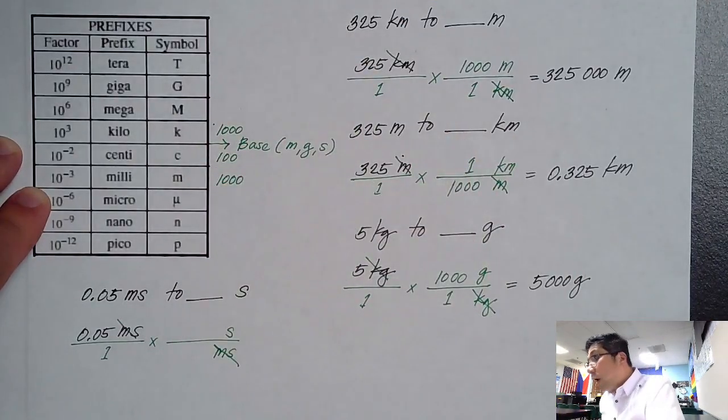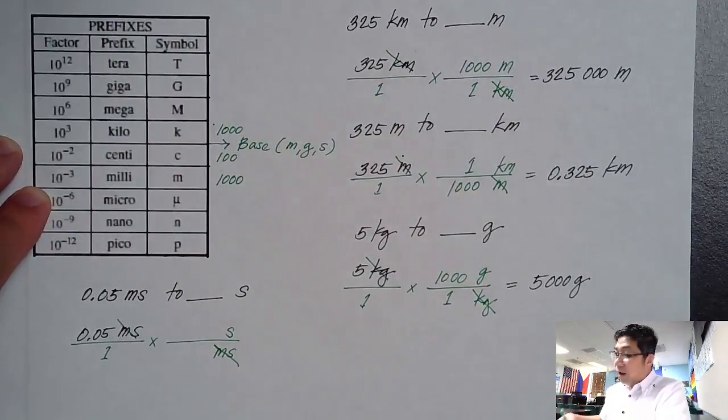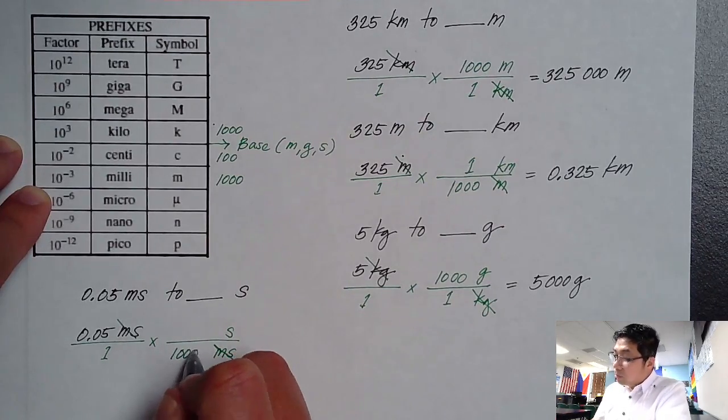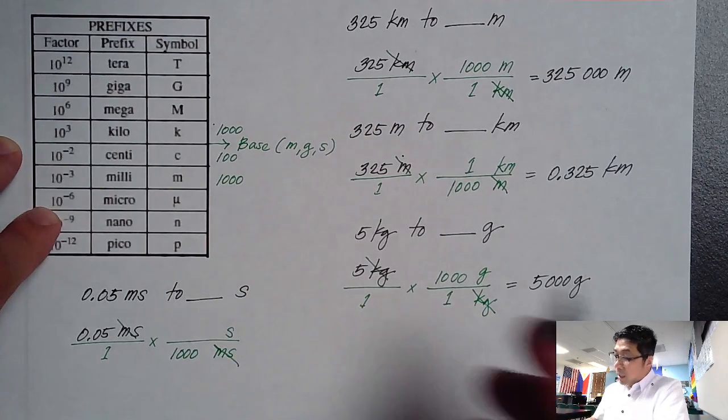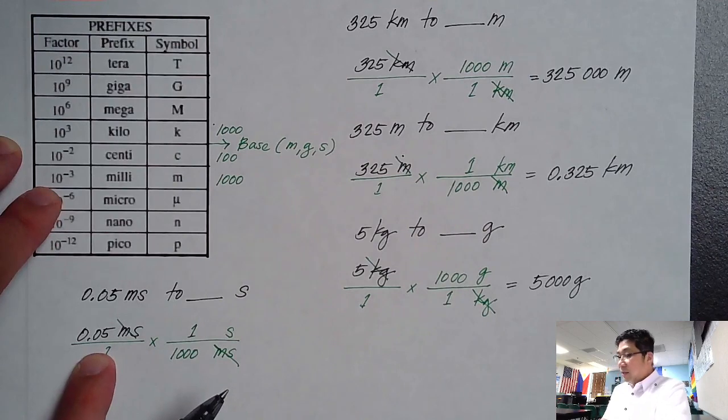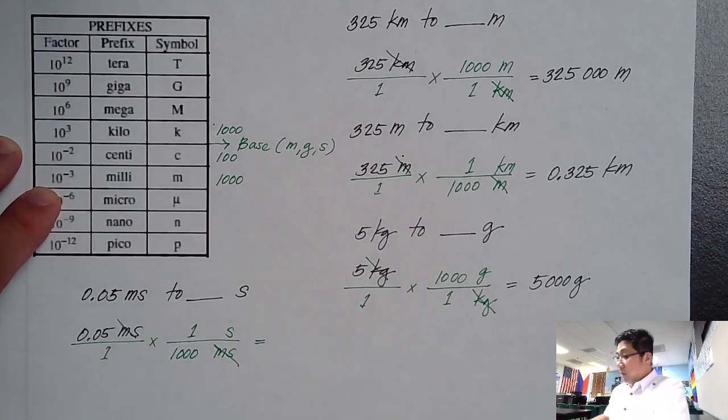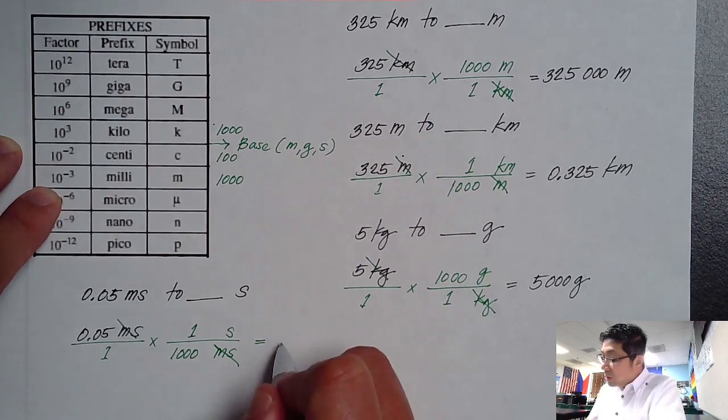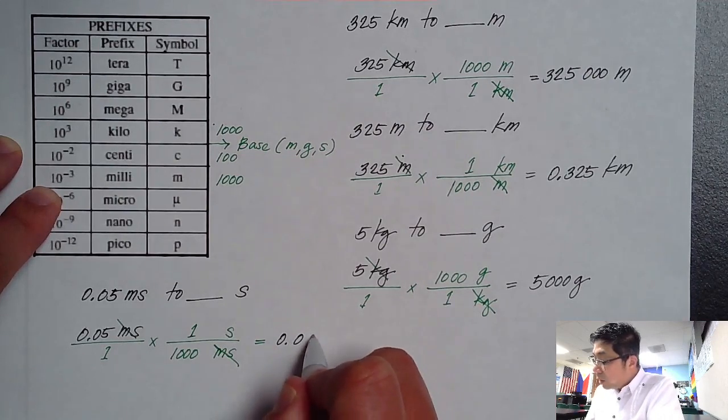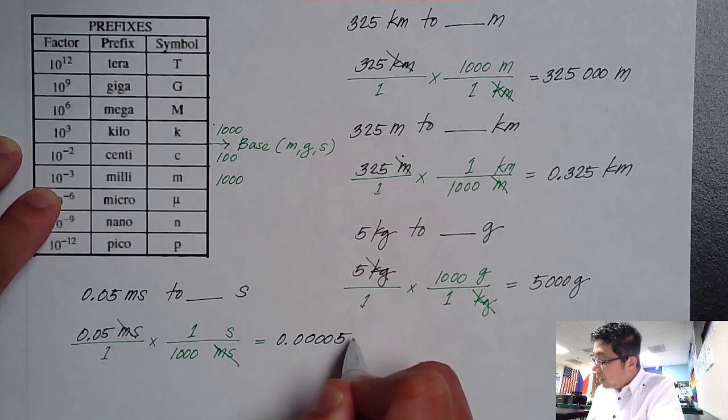So meaning there are 1,000 millisecond for every 1 second. So let's divide this again by 1,000. So meaning there should be an additional three zeros. So 0, 1, 2, and 3, and that will give us 0.00005 seconds.